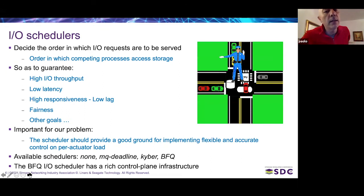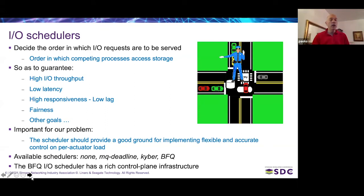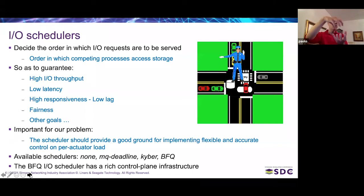For our problem, if we want to use a scheduler to control the balance between actuators, we need a scheduler that provides a good ground for implementing accurate, sophisticated, flexible logic on top of it. In Linux we have four IO schedulers available: None/MQ, Deadline, Kyber, and BFQ. Among these, BFQ is the one with the richest structure and control plane infrastructure, probably the best ground for growing something complex on top of it.